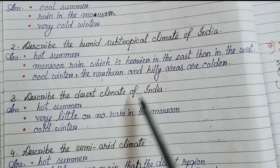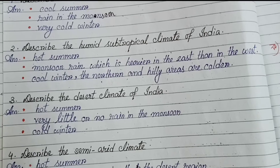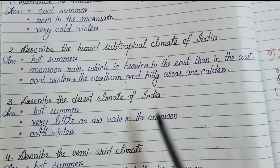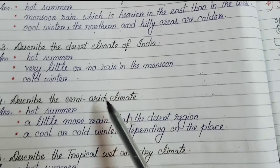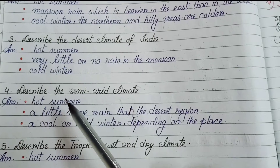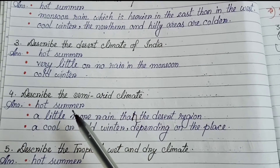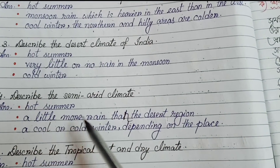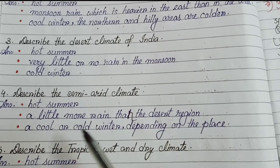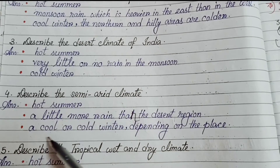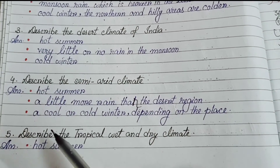Number 3: describe the desert climate of India — hot summer, very little or no rain in the monsoon, cold winter. Number 4: describe the semi-arid climate — hot summer, a little more rain than the desert region, a cool or cold winter depending on the place.